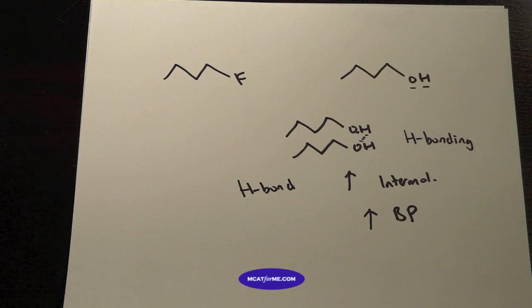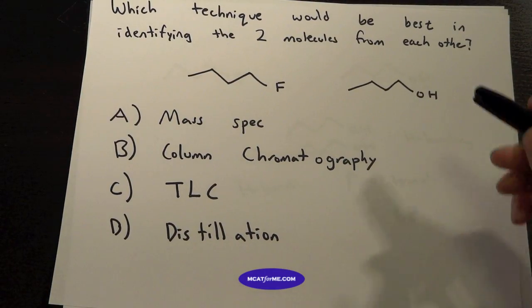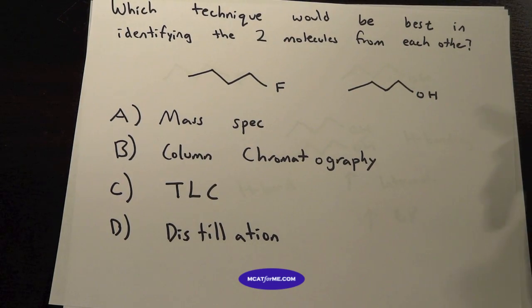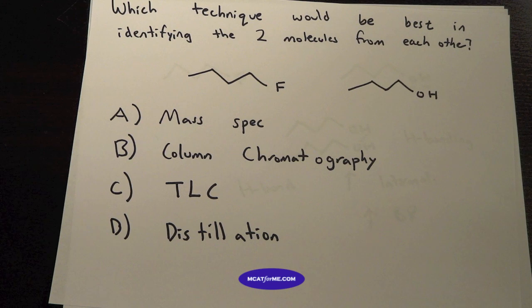Fluorine is not very large either. So we really wouldn't see that much Van der Waals forces in there. So knowing that, knowing that we have very different boiling points, we can kind of figure out what our answer is going to be. Because there's a very big difference in intermolecular force, that would have a very different effect on the boiling point, which would make it a lot easier to distinguish two things by distillation.